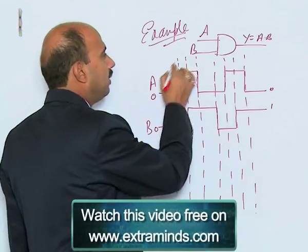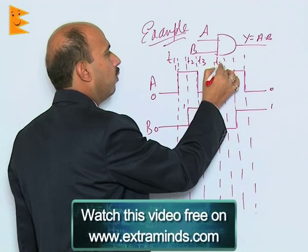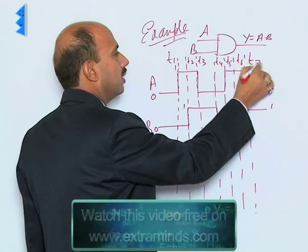Now see, if I allot here this is like T1, T2, T3, T4, T5, T6, and T7.